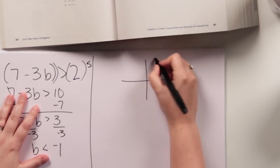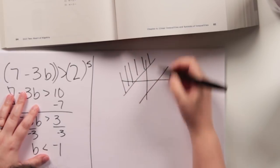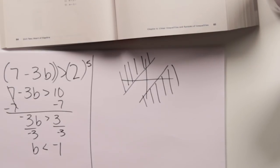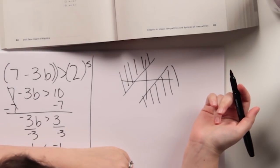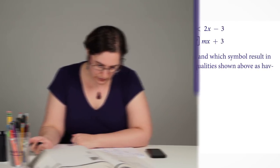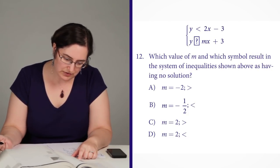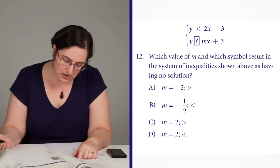So if there's no solution to a system of inequalities, then I need to have something that looks like this, basically, where they never intersect and they're shaded in opposite directions. So I need equivalent slopes, which means M needs to be two, so that gets me down to just C and D.